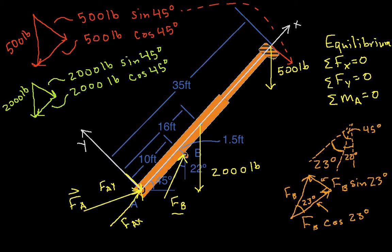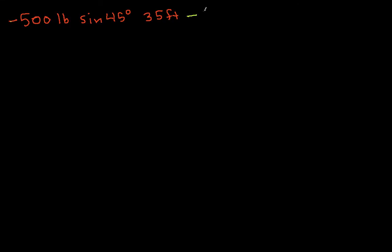We also have the weight of the boom. The component that will produce a moment about A is the y component of the 2,000 pound force, which is sine 45 degrees times 2,000 pounds, and it's operating on a moment arm of 16 feet. It's clockwise, so we'll have minus 2,000 pounds sine 45 degrees times a 16 foot moment arm.